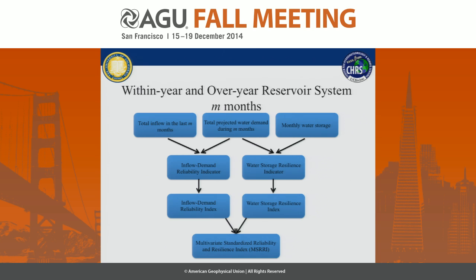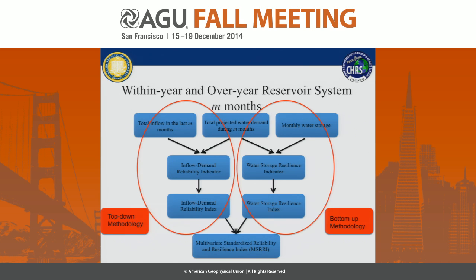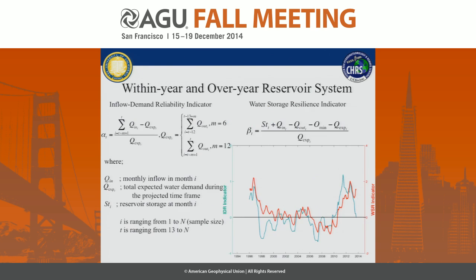We start by defining two new indicators: the Inflow Demand Reliability Indicator and the Water Storage Resilience Indicator, and then we convert them into an index. At the end, we use empirical probability to derive the multivariate standardized reliability and resilience index. In this framework, the bottom-up methodology is in the right branch and top-down is on the left. In bottom-up, the key factor is monthly water storage, while in top-down, it is all about total inflow to the reservoir. We define the inflow demand reliability indicator as alpha and water storage resilience indicator as beta.